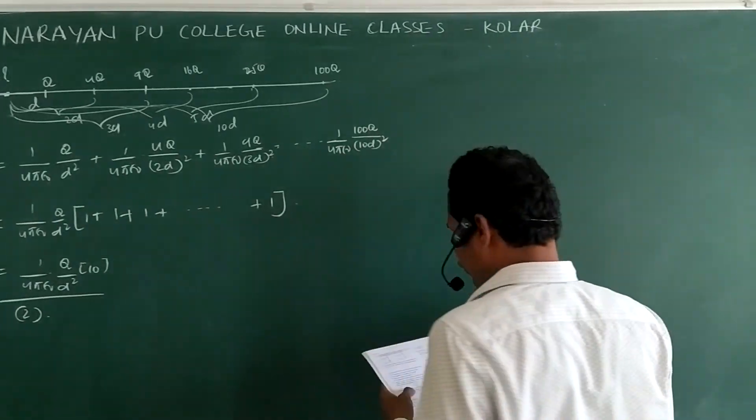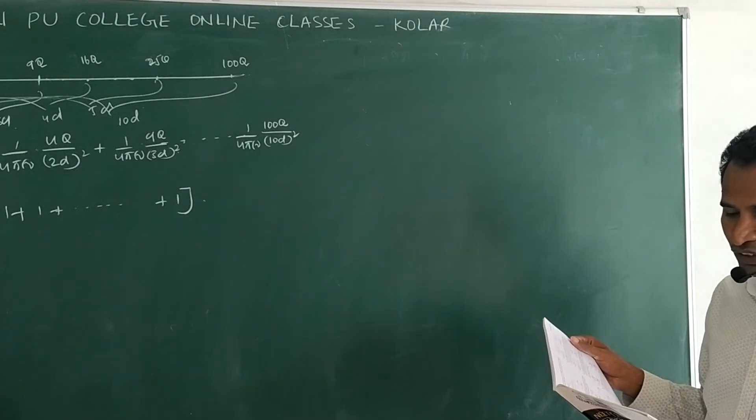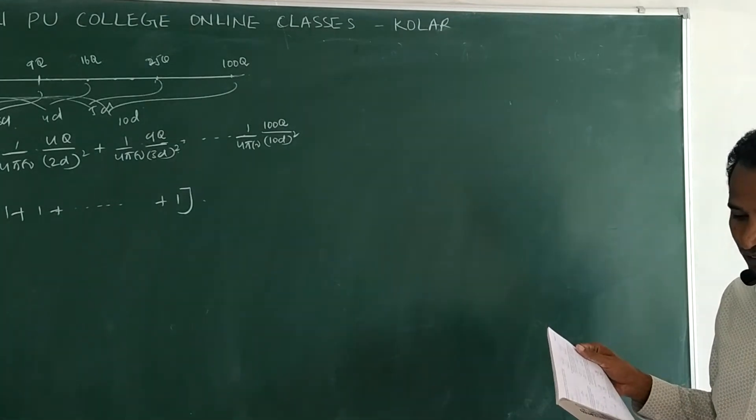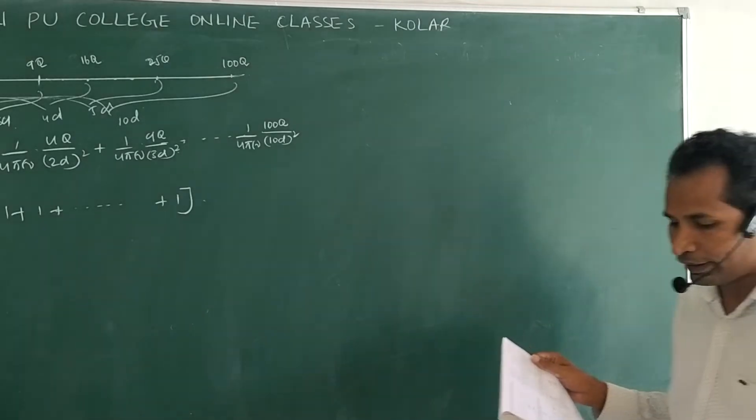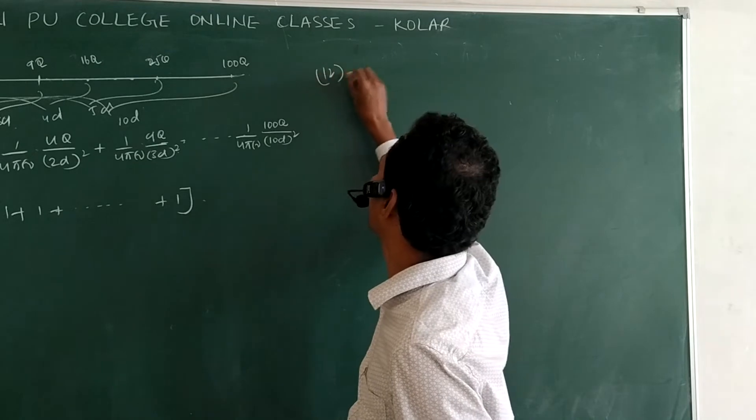Now, come to 12th question. A proton and alpha particle are placed in a uniform electric field. The ratio of their velocities after traveling equal distance is... So come to 12th question.